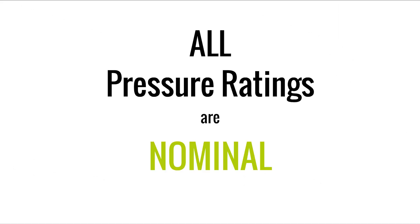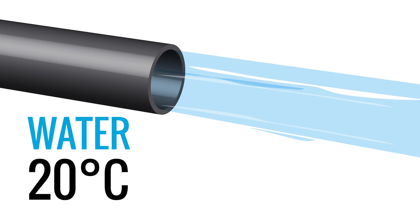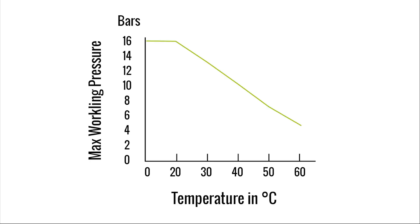The pressure handling capability of pipe is always dependent on multiple factors, and the pressure rating cannot cover all factors for every application. So it is essential to bear in mind that the pressure rating is based on piping water or similar media at a temperature of 20 degrees Celsius. Whenever piping at higher temperatures, the operating pressure should decrease — this is known as derating.